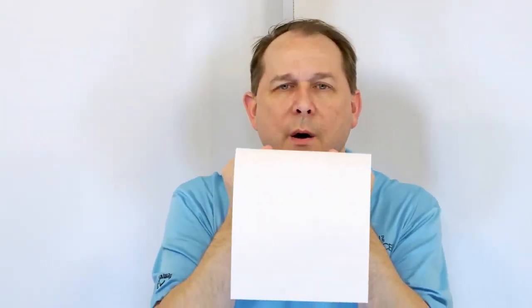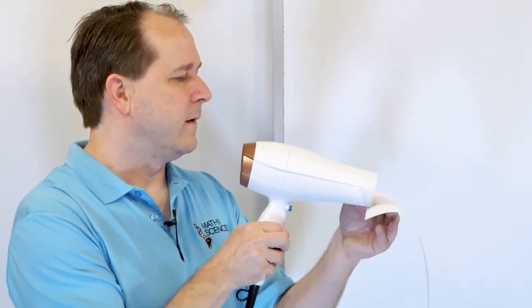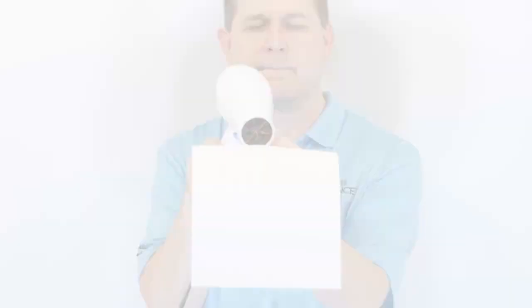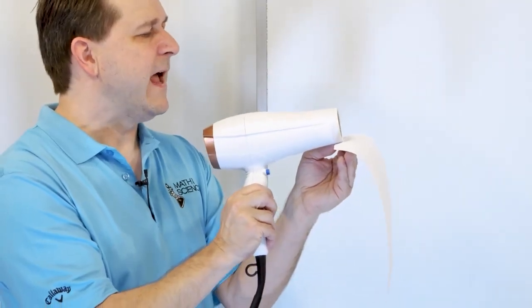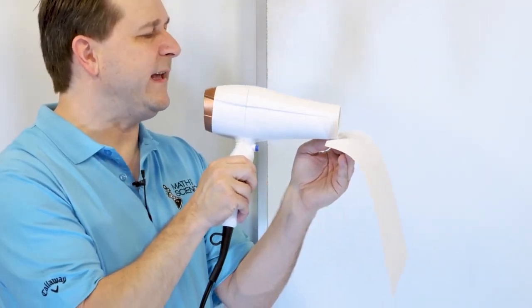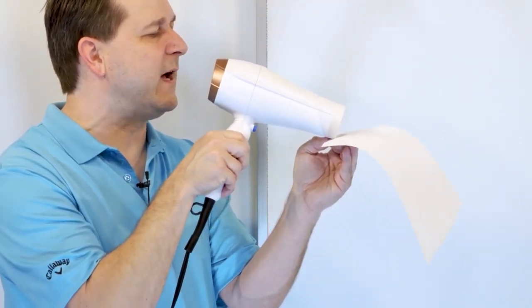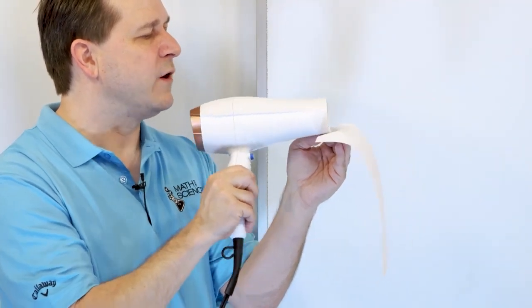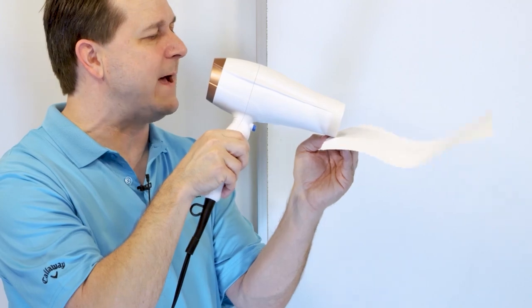Here it's pointed up, and as I angle it down, when the flow starts to intersect the top layer is when it starts to rise up. As soon as the air flow goes back up, it falls back down. When the airflow is parallel to the top, we see the paper flutter up. When I blow across the top, I'm creating lower pressure.